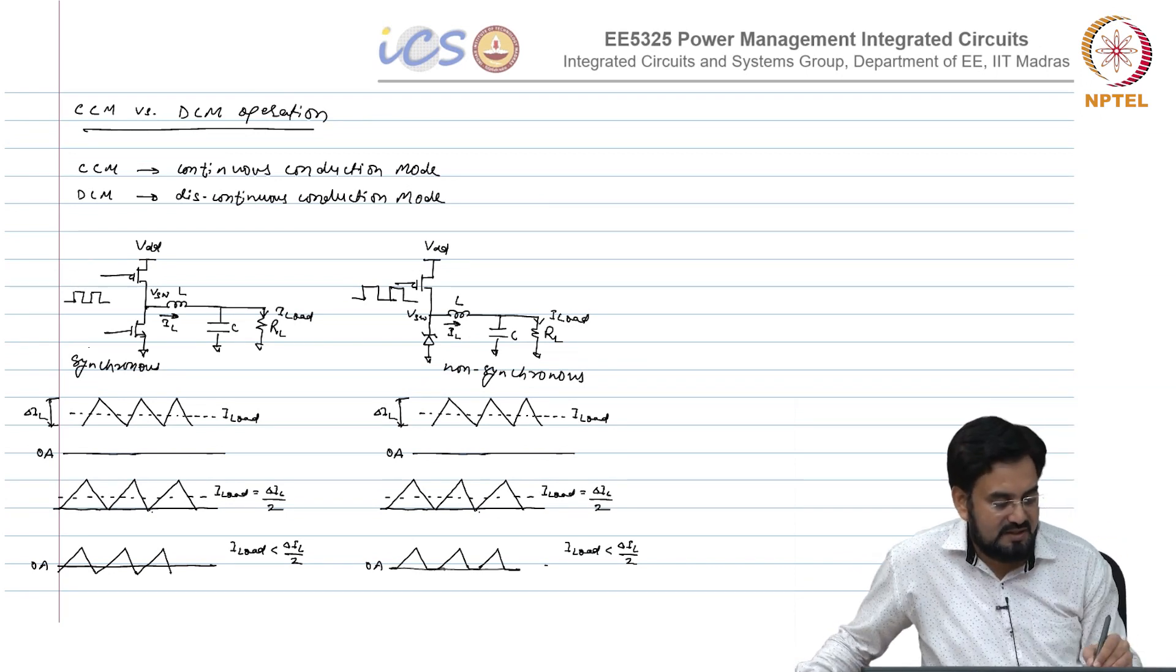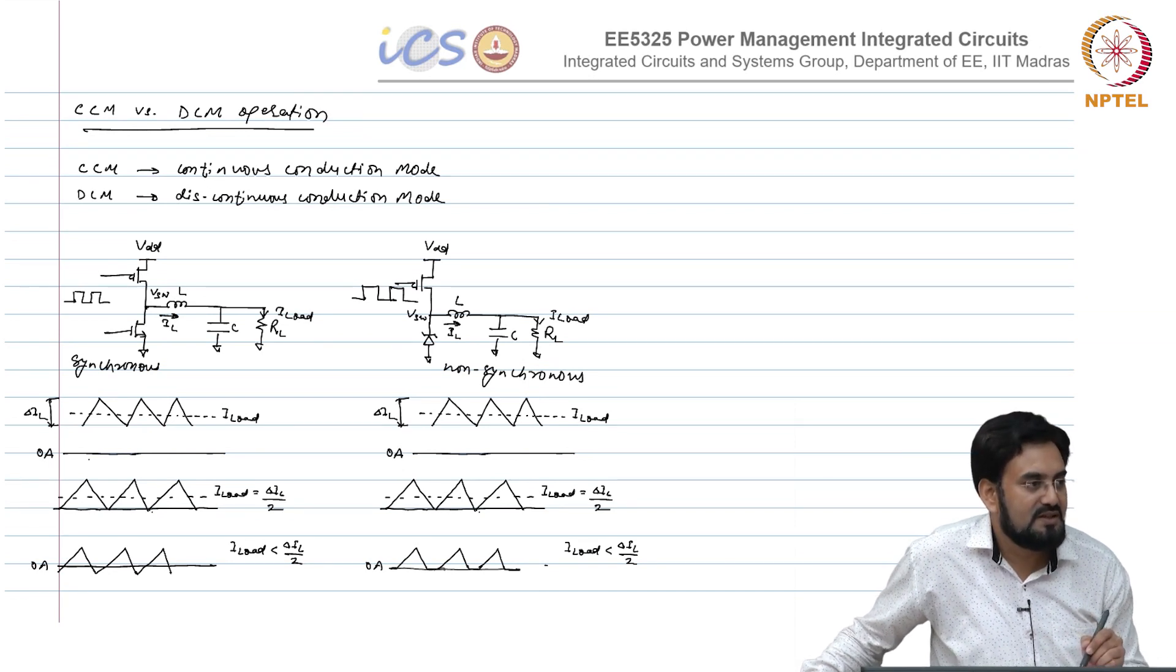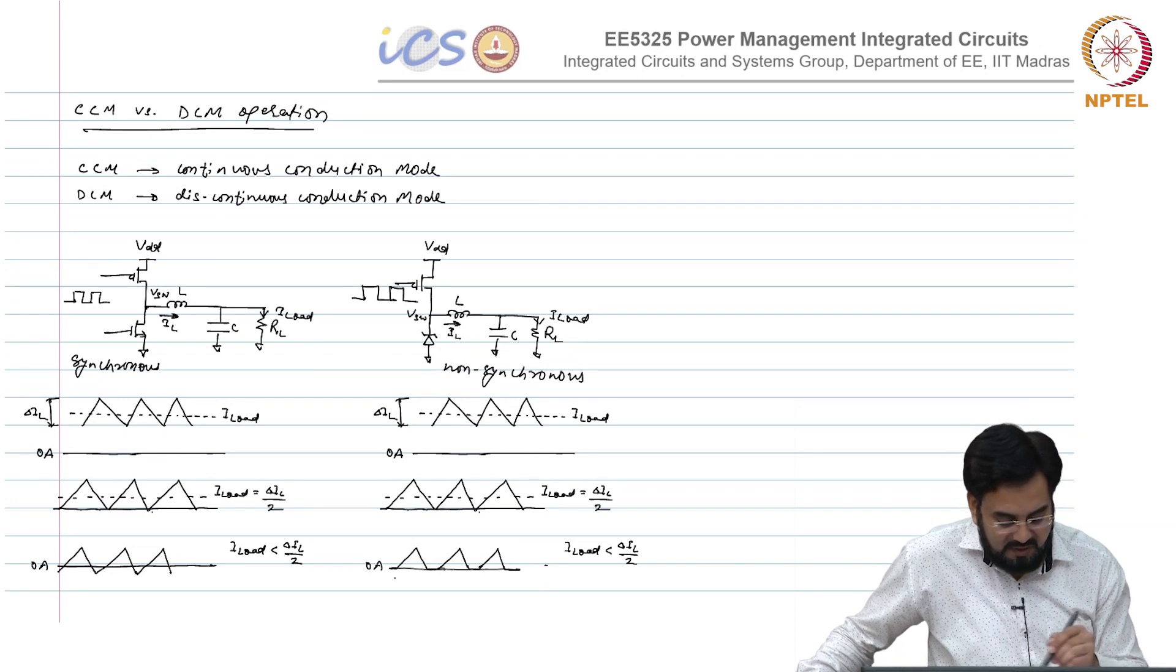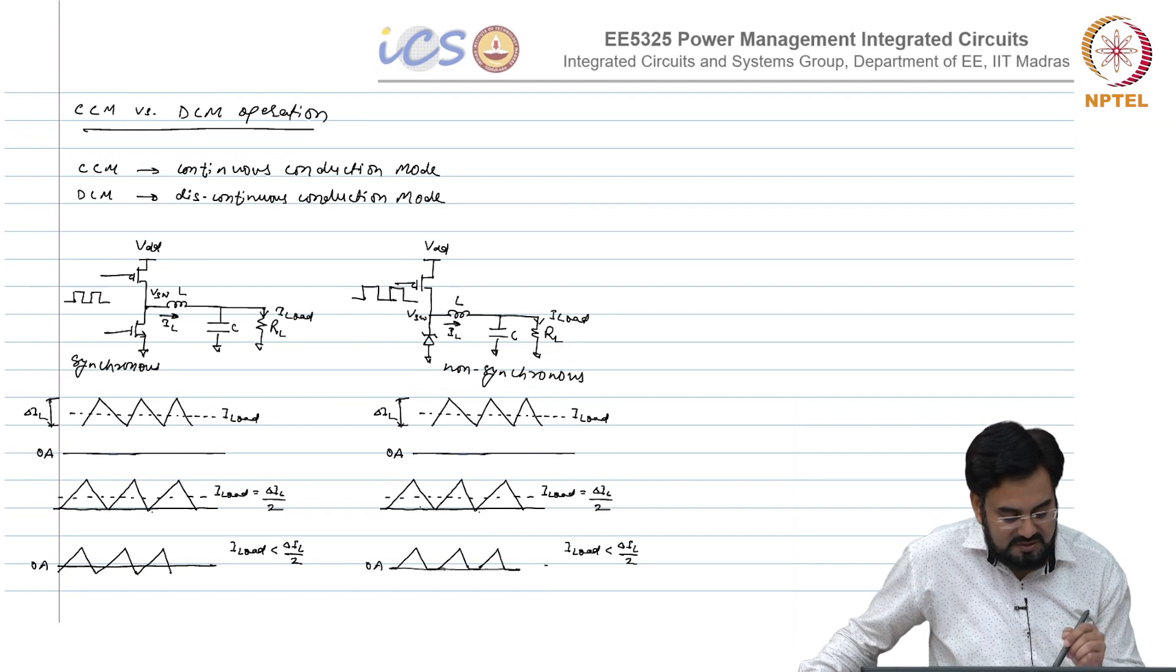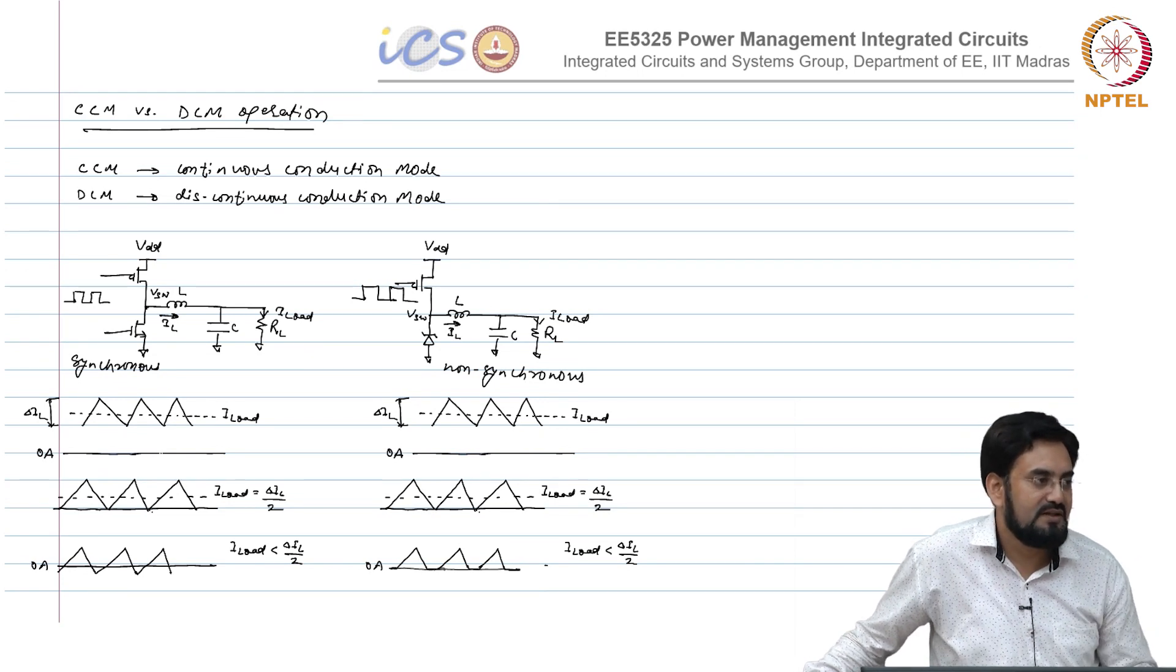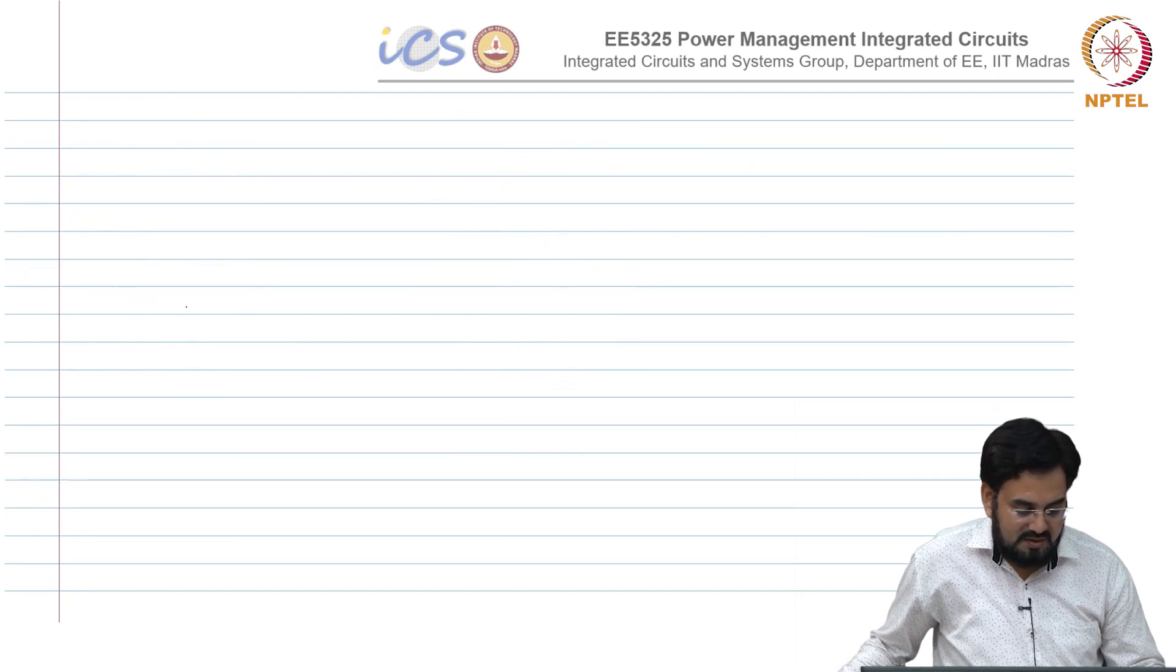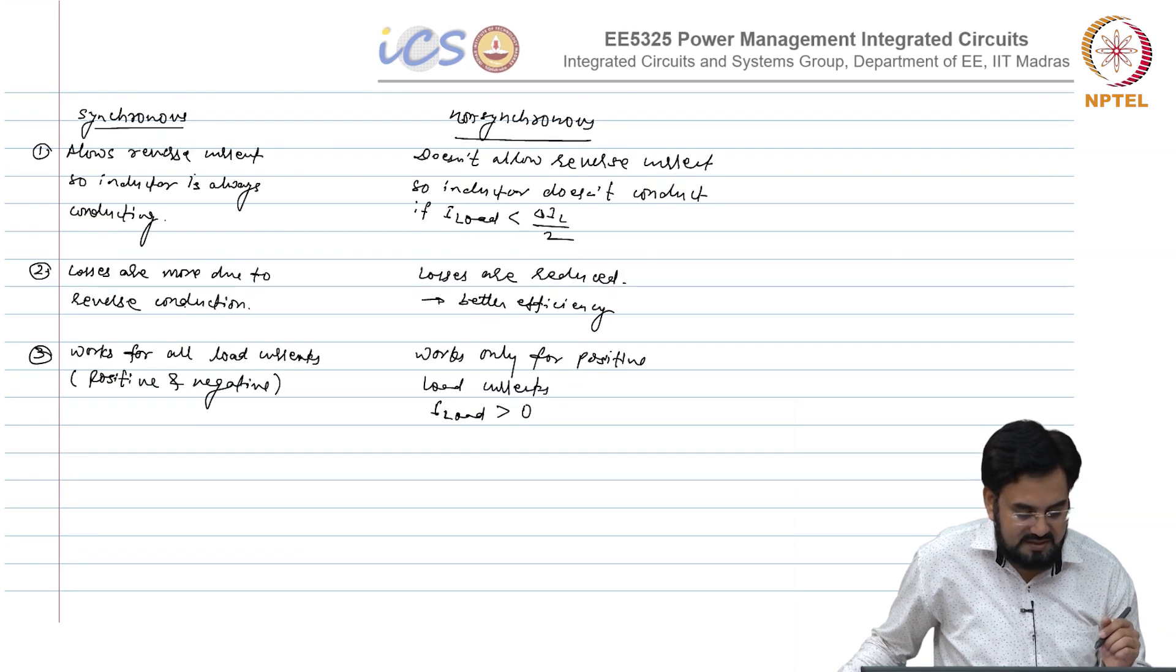The conduction losses can be reduced by choosing this, but since this is synchronous behavior, you want a discontinuous behavior in order to save the losses or reduce the losses. We try to force this NMOS to behave like a diode when the current goes below 0. We will look at it how we do, but before that we need to go through some derivation.